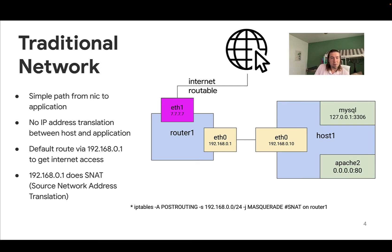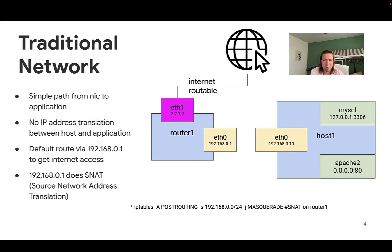We're going to start with a very simple traditional network where we have a MySQL application and a web server running on host 1. The Apache web server is listening on 0.0.0.0, so any traffic coming to host 1 hitting port 80 will be able to hit the web server directly. MySQL is only listening on localhost, so only the web server has access to that.